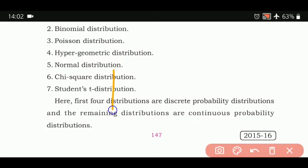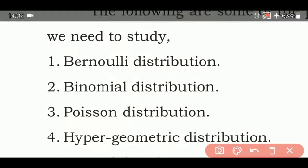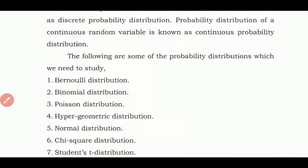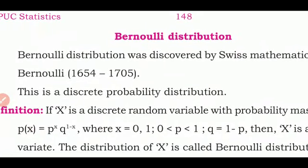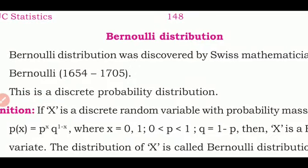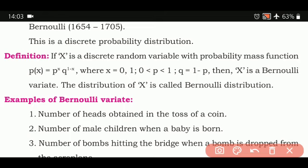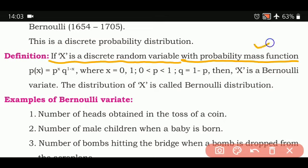Let us begin with the first distribution — Bernoulli distribution. Bernoulli distribution was discovered by Swiss mathematician James Bernoulli. This is a discrete probability distribution. If x is a discrete random variable with the probability mass function P(x) = p^x · q^(1−x), this is the formula or PMF you will use to solve examples.